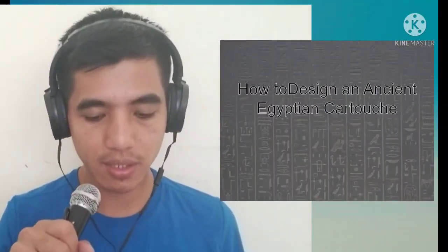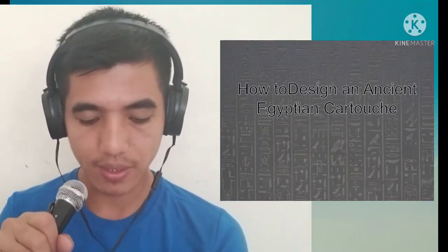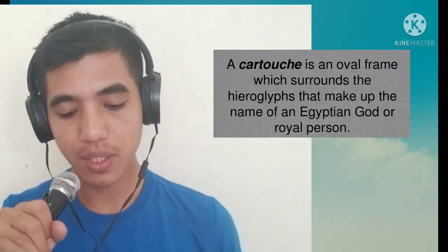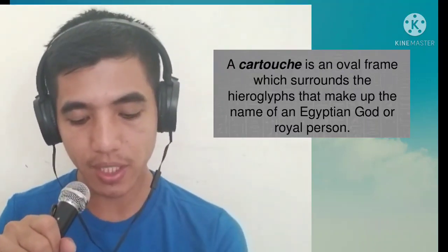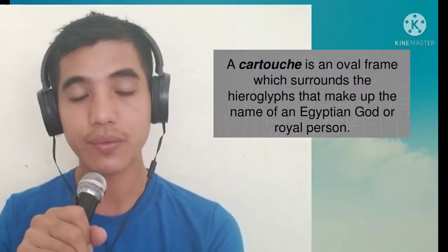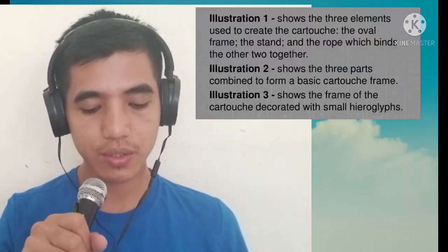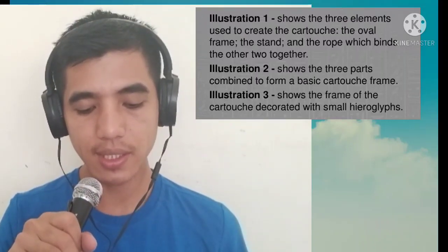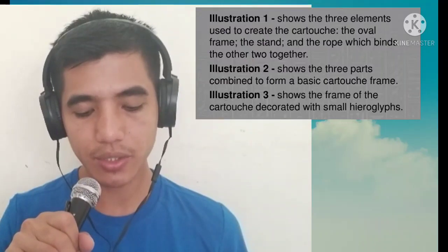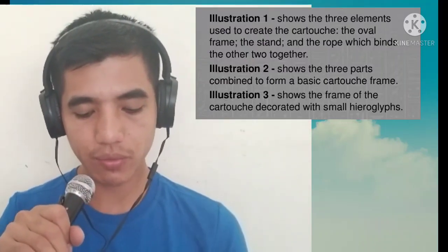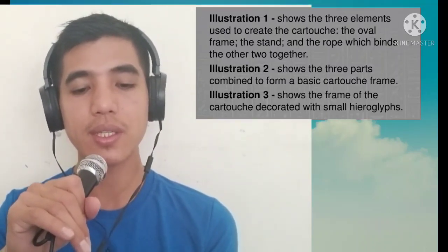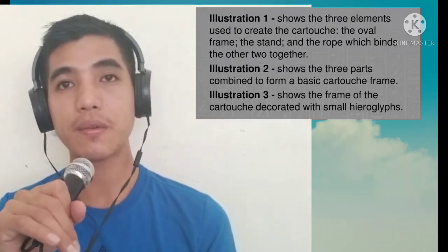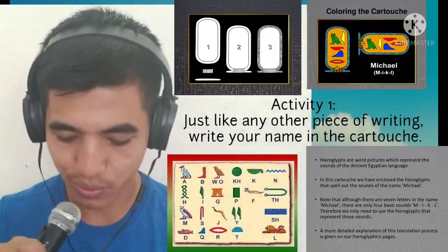Now, how to design an ancient Egyptian cartouche. A cartouche is an oval frame which surrounds hieroglyphs to make up the name of an Egyptian god or royal person. It shows three elements: the oval frame, the stand, and the rope which binds the other two together — combined to form a basic cartouche frame, then decorated with small hieroglyphs. You will write your name in a cartouche for your activity.